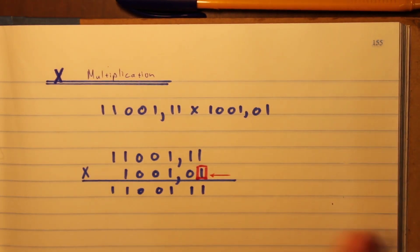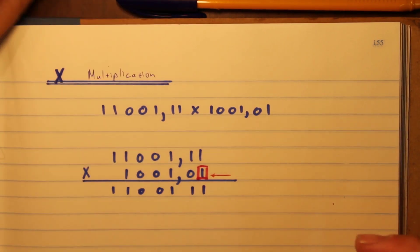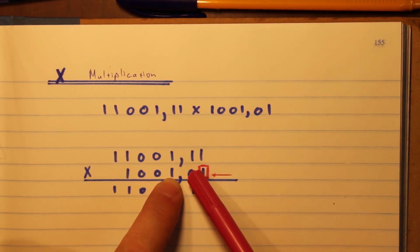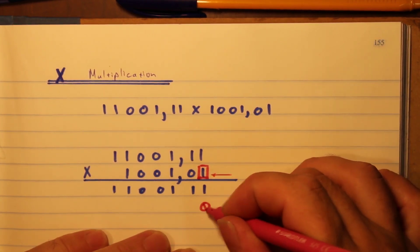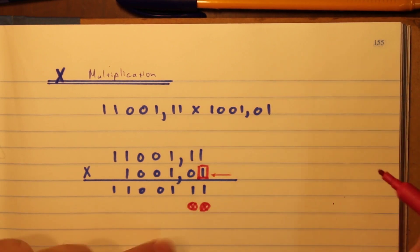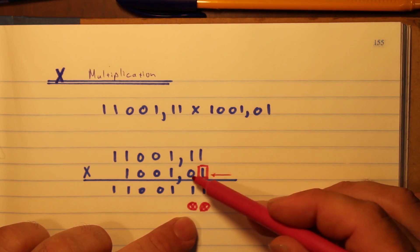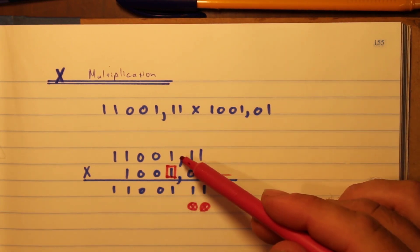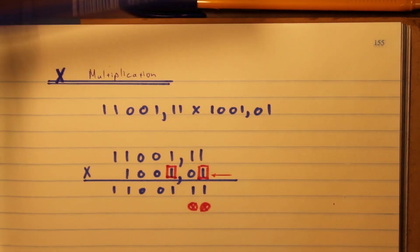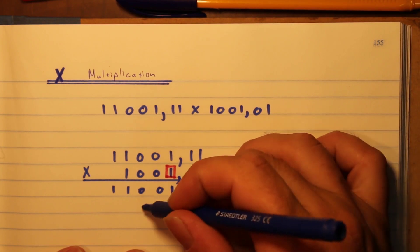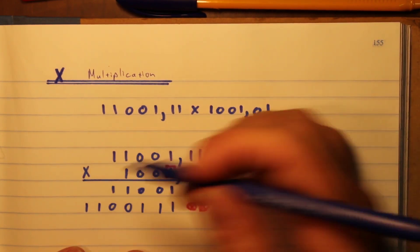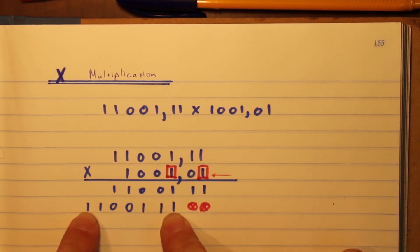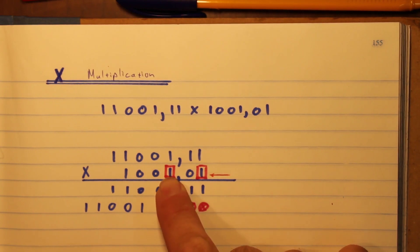Then we keep going — where is the second one? It's over here, which means we have to skip two places. I put a little circle with an X in it for each skipped position, just to remind myself. Then one times the top number is the same number, so I write it down: one one one zero zero one one. But now it's shifted two positions to the left because that's where that one is.